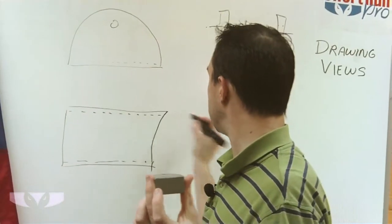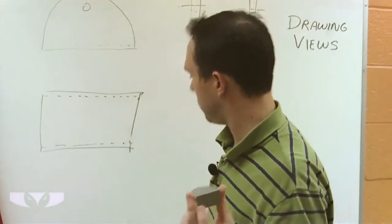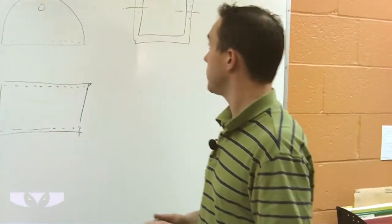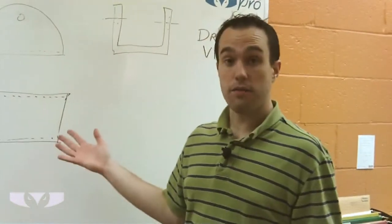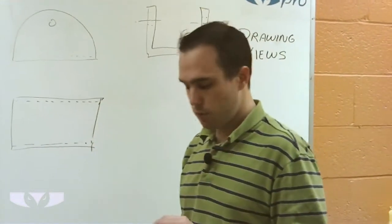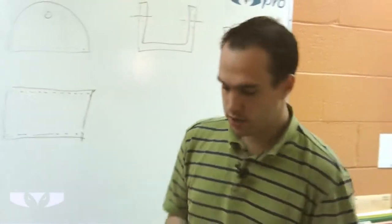Dotted lines are hidden lines, which is talked about in another segment of this drawing view series. So there we have our three views, and for this particular part, that'll give us all the information we need to dimension it.